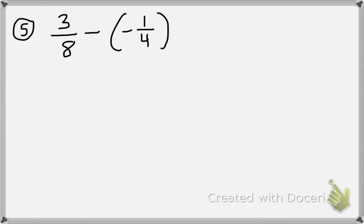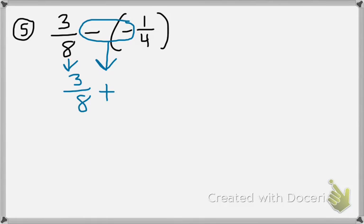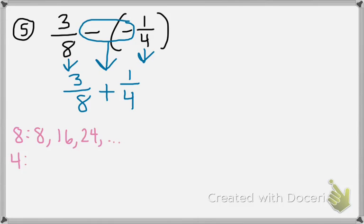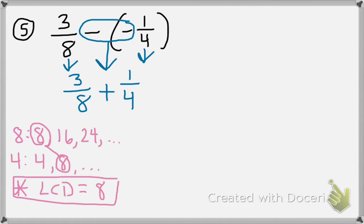Number 5: 3 eighths minus negative 1 fourth. We have two signs next to each other — circle them. A negative and a negative make a positive. So now we just have 3 eighths plus 1 fourth. We need to find the LCD because the denominators are not the same. Start with the bigger one — 8 and then 4. Multiples of 8: 8, 16, 24... Multiples of 4: 4, 8. That was quick — our LCD is 8. We already have a fraction with denominator 8, so we don't need to change that one.